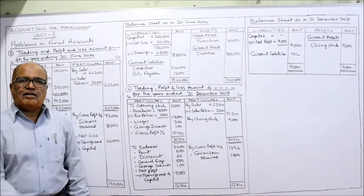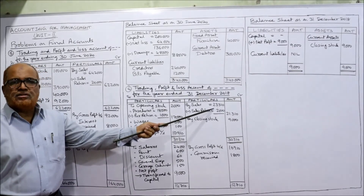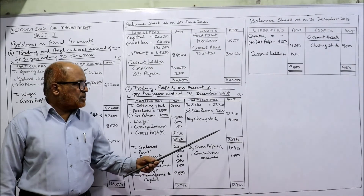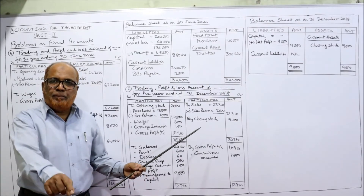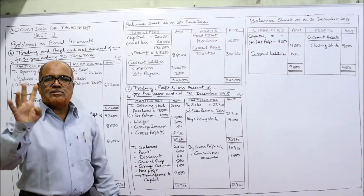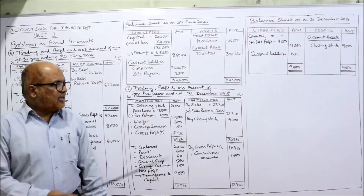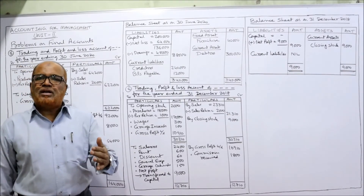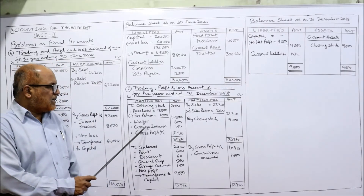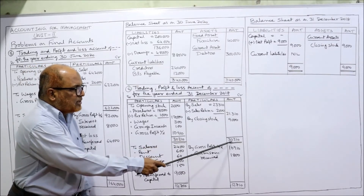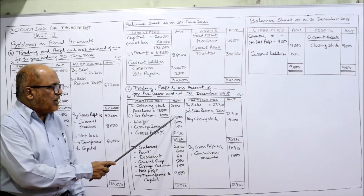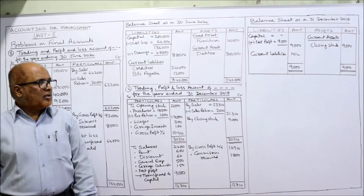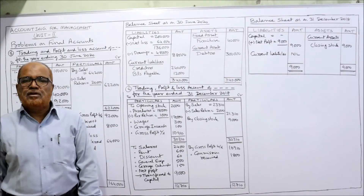Trading and profit and loss account for the year ended 31st December 2018. Credit side: sales are 23,310. Deduct sales return of 2,000 — net sales 21,310. Closing stock given below the trial balance is 9,000. Debit side: opening stock 2,000, purchases 18,000 minus purchase returns 1,000 equals net purchases 17,000, wages and carriage inward also included. Credit side total: 21,310 plus 9,000 equals 30,310. Gross profit carried down is 10,910.